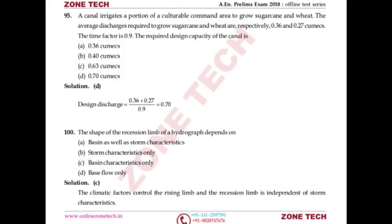Question number 95: A canal irrigates sugarcane and wheat. Average discharge for sugarcane = 0.36 cumecs, wheat = 0.27 cumecs. Time factor = 0.9. Find design capacity of canal. Sugarcane is a perennial crop needing water throughout the year; wheat needs water seasonally. Total discharge = (sugarcane + wheat discharge)/time factor = (0.36 + 0.27)/0.9 = 0.7 cumecs. Answer is D.